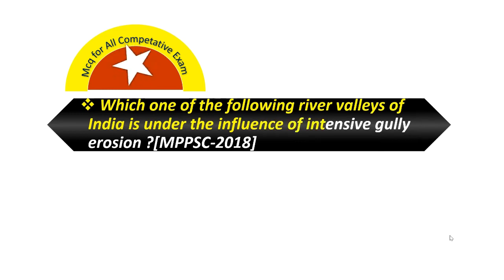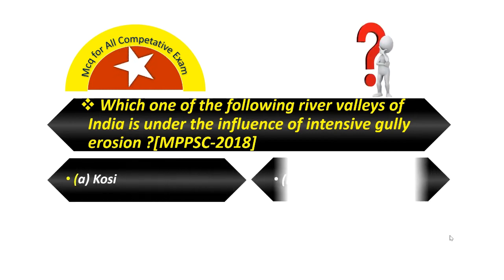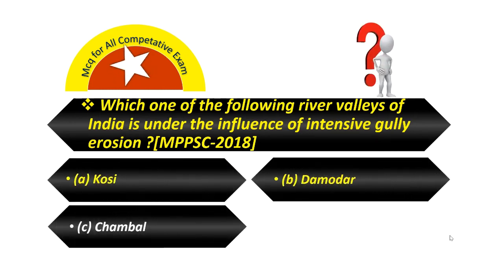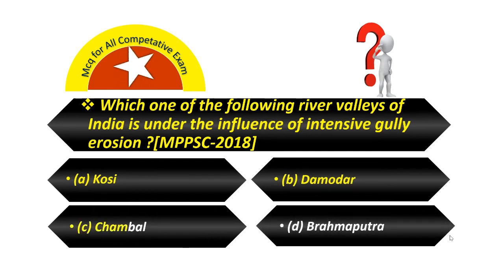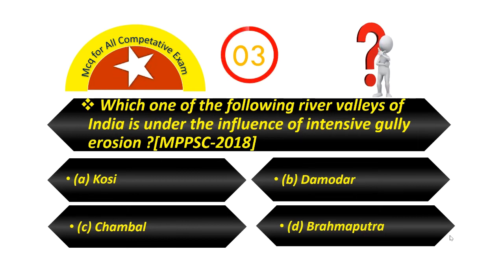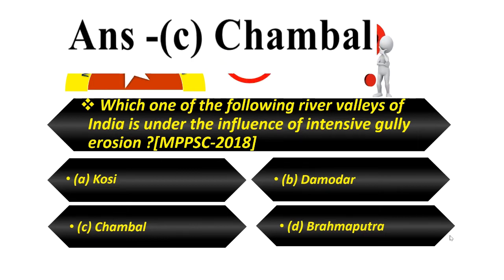Which one of the following river valleys of India is under the influence of intensive gully erosion? Option A — Kosi. Option B — Damodar. Option C — Chambal. Option D — Brahmaputra. Your answer is Chambal.